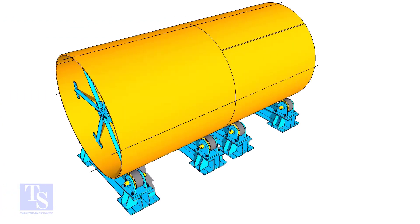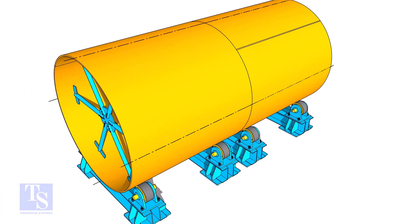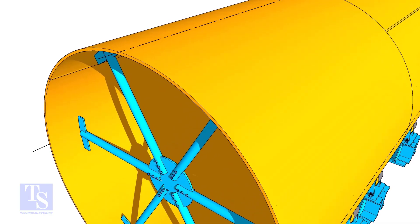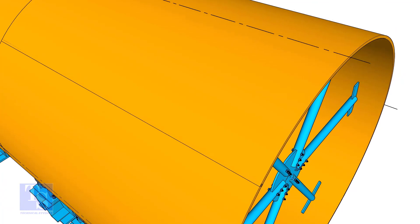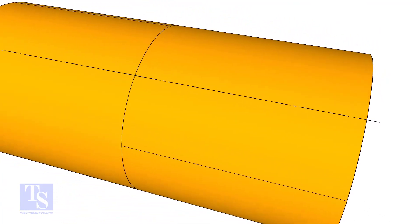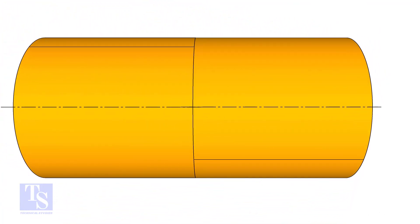Once the welding of the individual shells is complete, double the shells. Make sure the long seams of the shells are not in a line or too close. Complete the circumferential seam fit up and welding.